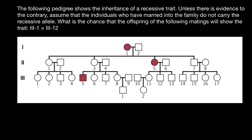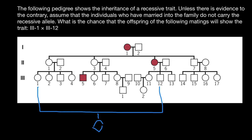So, individual III-1 in the third generation, and III-12. We connect these two people and we have to find the probability that their child — sex is not specified, it's not important — would have this genetic disorder. Take a look: we have a couple here that has four children. This woman and this woman are sisters, so we have a consanguineous mating between close relatives — these relatives are cousins. Let's first think about genotypes in this family.